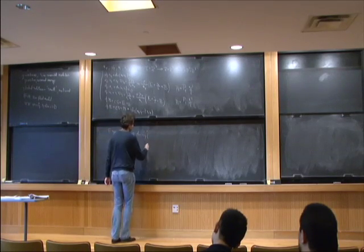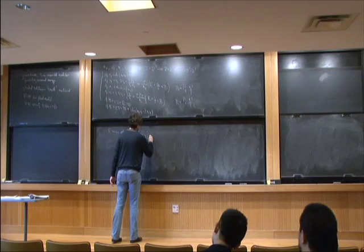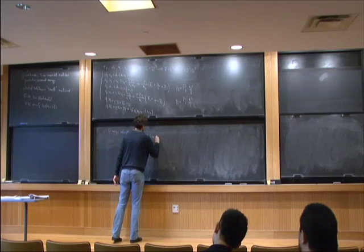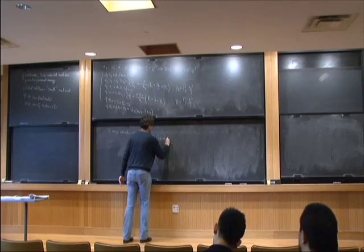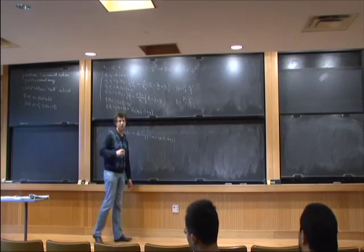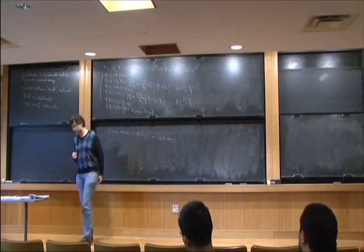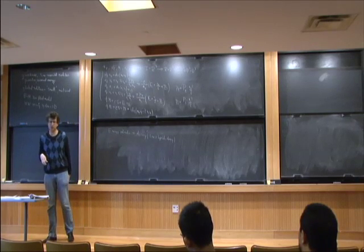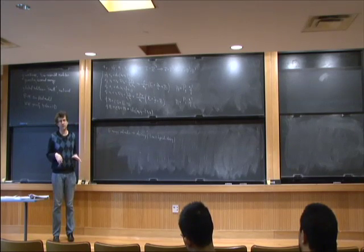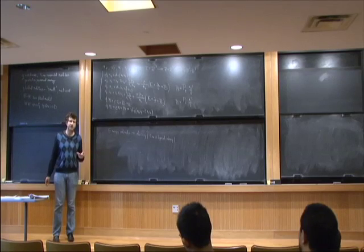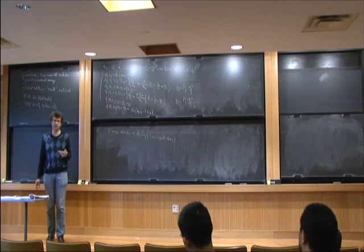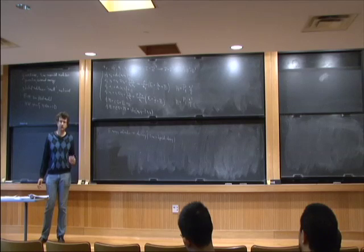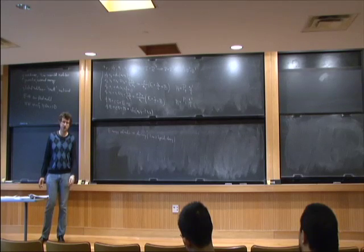If you don't have time-integrable decay, you cannot prove global. Maybe you can gauge away the problem — it can become very tricky. For example, the second problem I'm going to talk about: you don't have canonically time-integrable decay, but after suitable gauges, you have it.